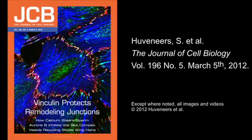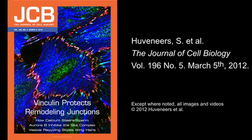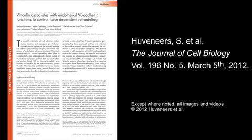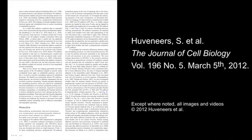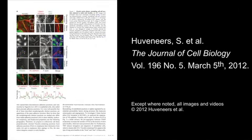We would also like to use this alpha-catenin mutant that cannot recruit vinculin and therefore cannot participate in mechanosensing in a model organism like zebrafish, to investigate what the consequence is on tissue development and tissue remodelling. You can learn more about the role of vinculin in endothelial junction remodelling in the paper by Hüveniers et al., published in the March 5, 2012 issue of the Journal of Cell Biology.